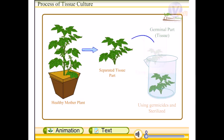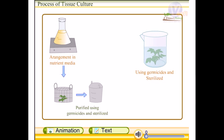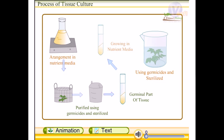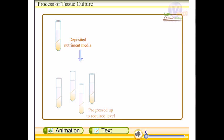After sterilization, the sterilized tissue part is deposited in the nutrient media using the laminar air flow cabinet. Thereafter, multiplication of the tissue part growing in the nutrient media is progressed to the required level.